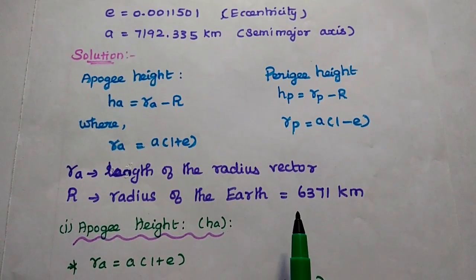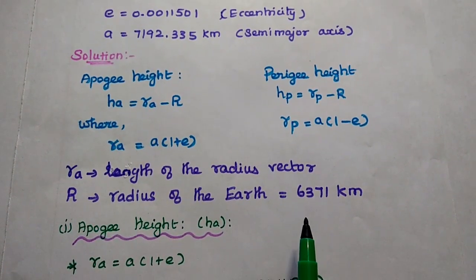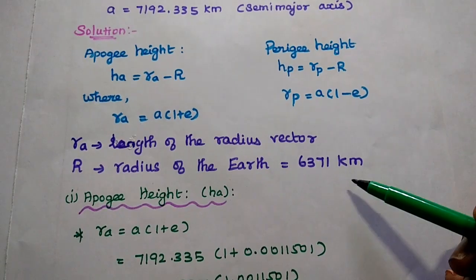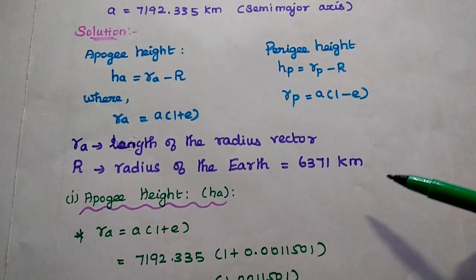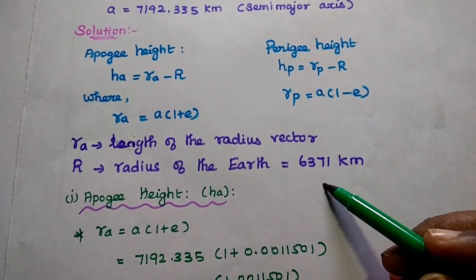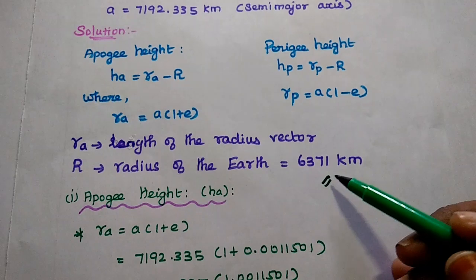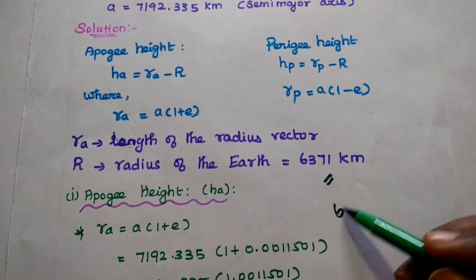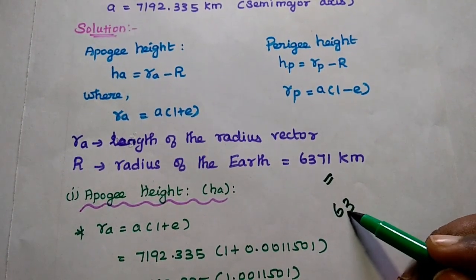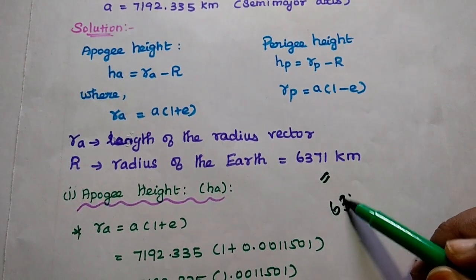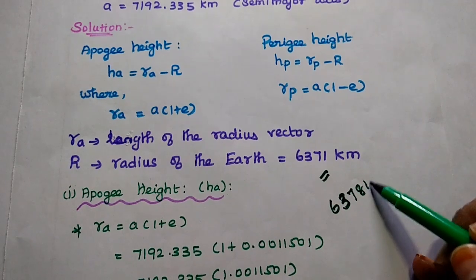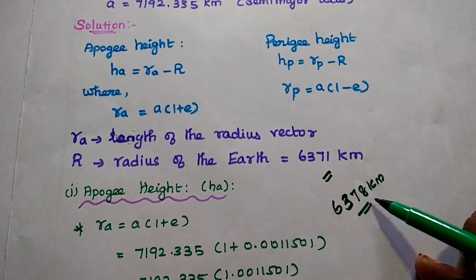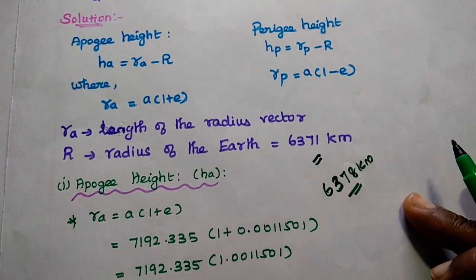The value of R is 6371 km. For these perigee and apogee height calculations, we have to keep this value as such. In some other problems, we can use the equatorial radius as 6378 km. So this is the equatorial radius of the earth.